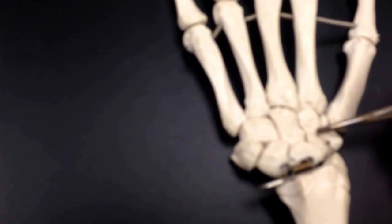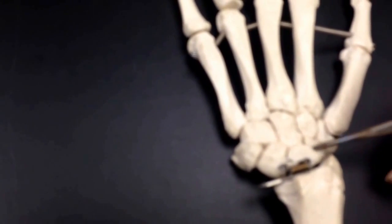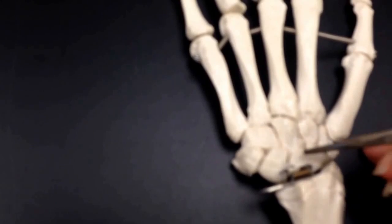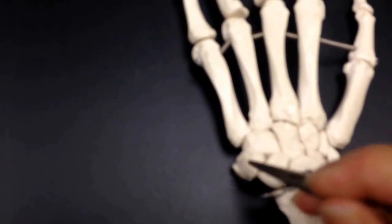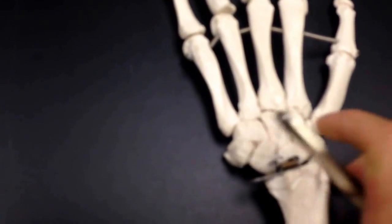And we start with this curvy bone: scaphoid, lunate, triquetrum, pisiform.